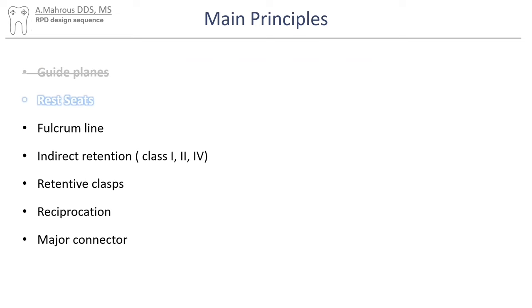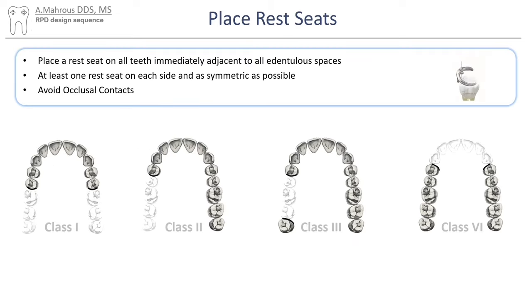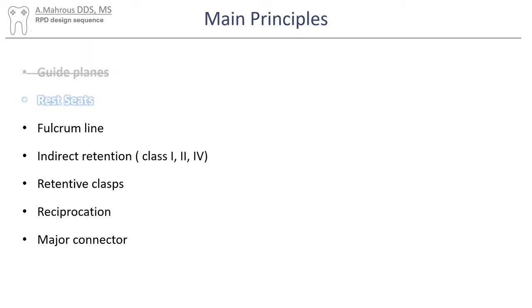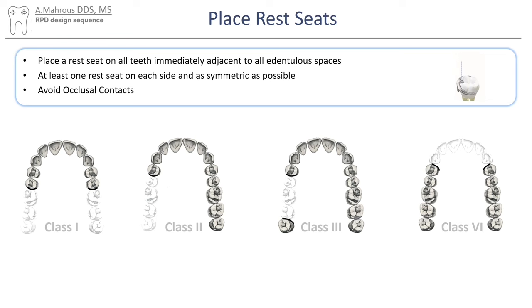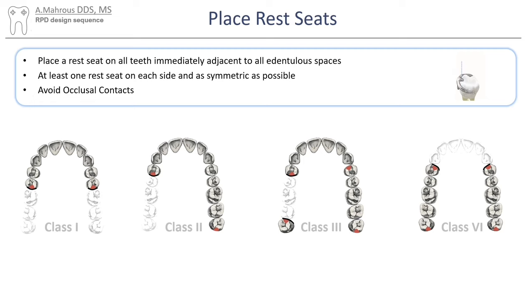Next, let's move on to rest seats. We will leave a link for a video on rest seats if you're not familiar with them. Like guideplanes, rest seats are placed on the teeth adjacent to the edentulous space. Additionally, rest seats should be placed on both sides of the arch and as symmetrically as possible. This means that some rest seats are going to be placed on the dentate side of the arch, like in class 2 and class 3 cases here.